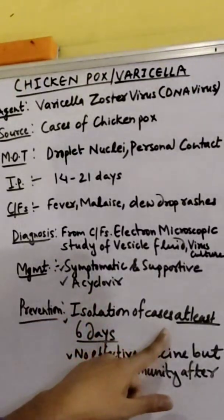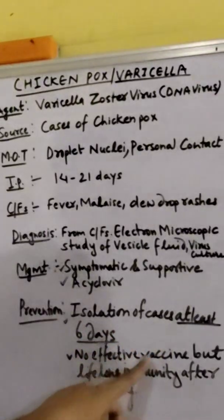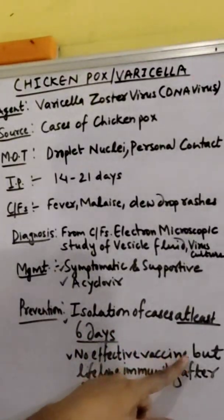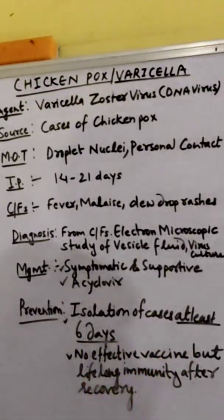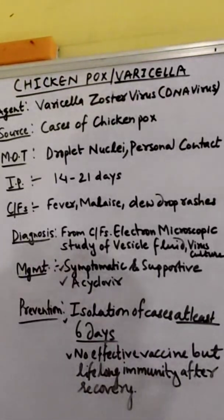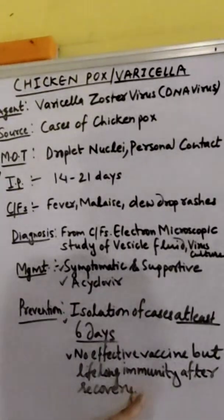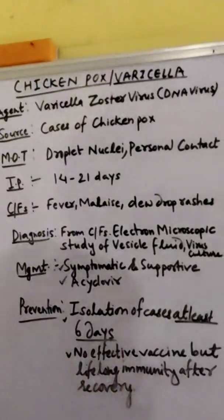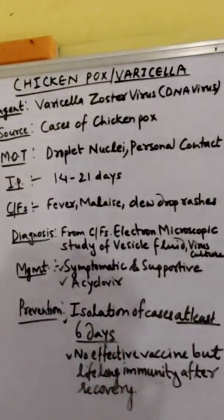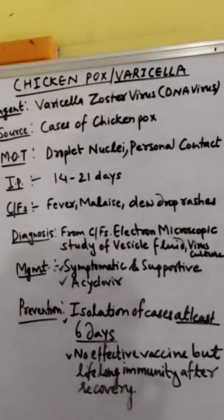Prevention includes isolation of cases for at least 6 days. There is no effective vaccine, but lifelong immunity develops after recovery. If someone recovers from chickenpox, lifelong immunity will be developed and chickenpox will not occur again in those cases.